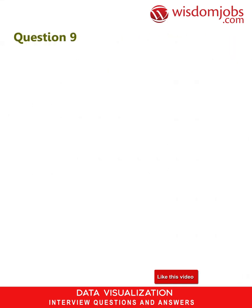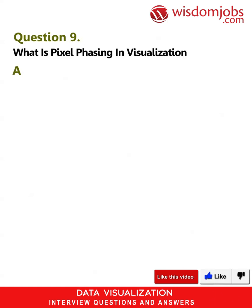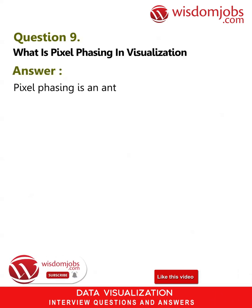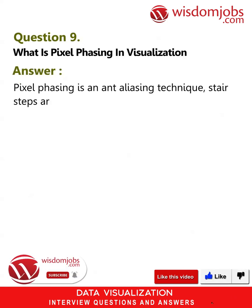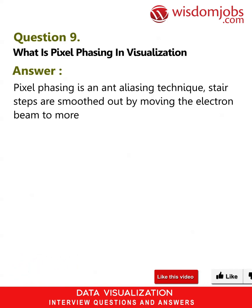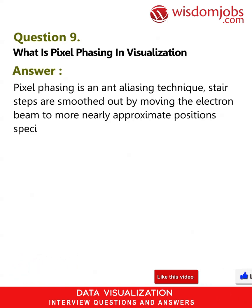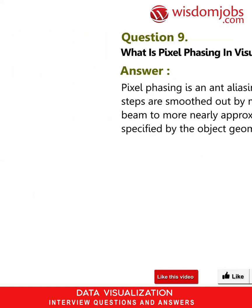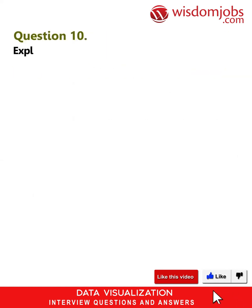Question 9: What is pixel phasing in visualization? Answer: Pixel phasing is an anti-aliasing technique where staircase steps are smoothed out by moving the electron beam to more nearly approximate positions specified by the object geometry.